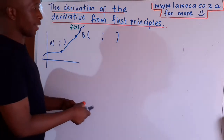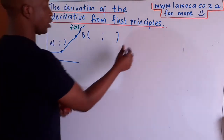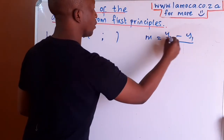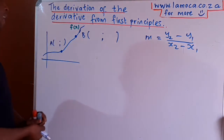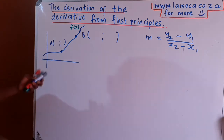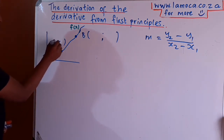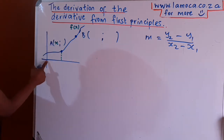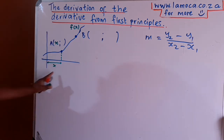In order to find the gradient — I'll call that gradient m — you're going to say m equals y2 minus y1 over x2 minus x1. We all know this. Now let's give point A an x-coordinate and just say that x-coordinate is going to be x. If the x-coordinate at point A is x, that means it is x units from the origin.